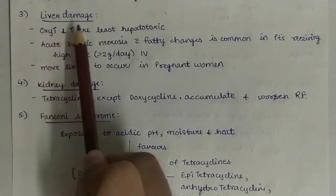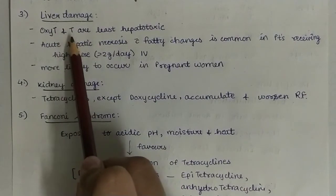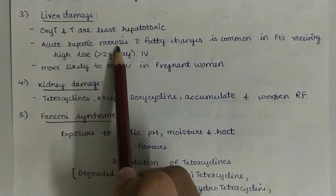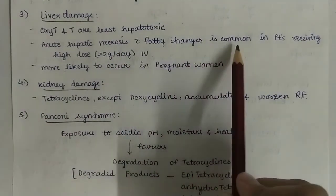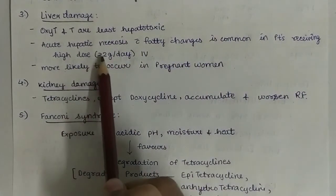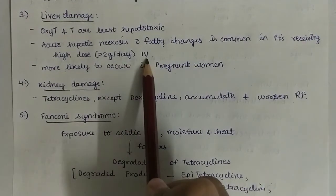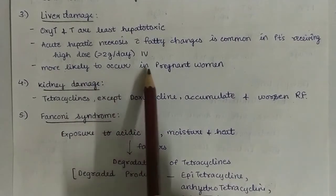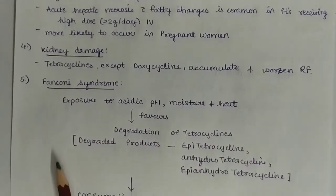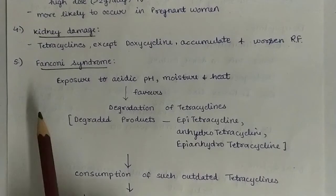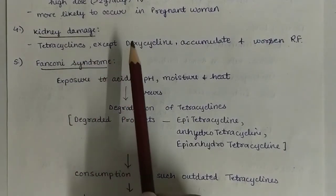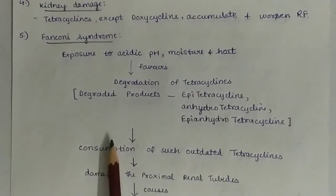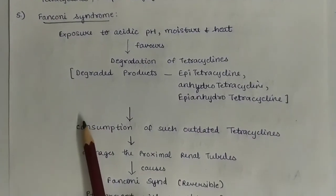Third, liver damage. Oxytetracycline and tetracycline are least hepatotoxic. Acute hepatic necrosis along with fatty changes is common in patients receiving high doses — more than 2 g per day IV of tetracycline. It is more likely to occur in pregnant women. Fourth, kidney damage: tetracycline, except doxycycline, accumulates and worsens renal failure. Doxycycline is safe in renal failure.